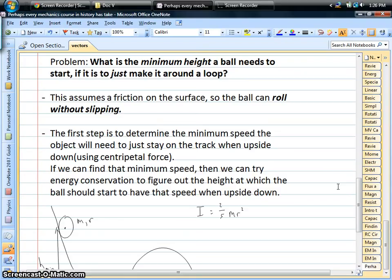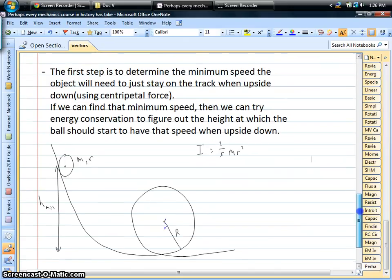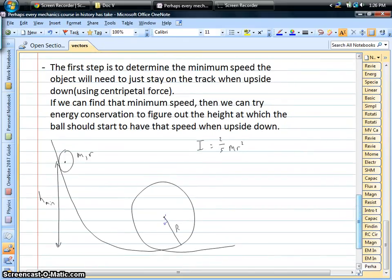If a ball was rolling down a hill and it gets to the bottom and goes up loop-de-loop, what's the minimum height that the ball has to start at up on the hill in order to just make it around the loop?